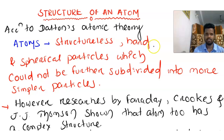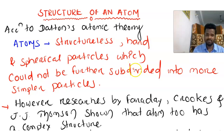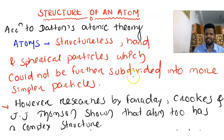According to Dalton's Atomic Theory, the atom was regarded as a structureless, hard and spherical particle which could not be further divided into simpler particles. Dalton said the atom is the smallest particle in this universe. An atom can neither be created nor destroyed. This is the smallest particle and it is the building block of matter.